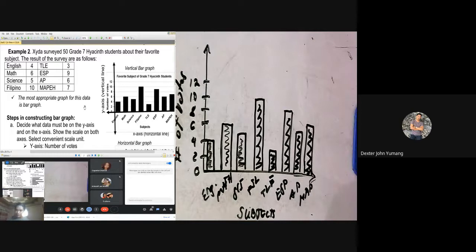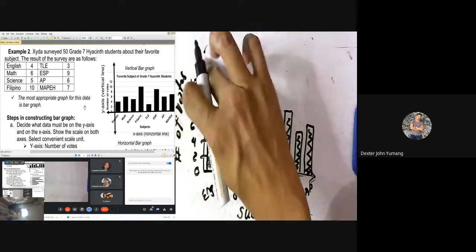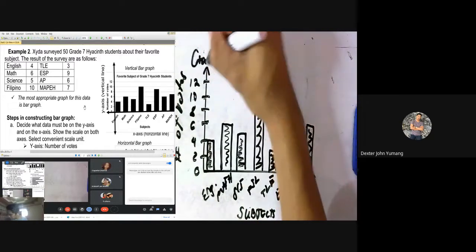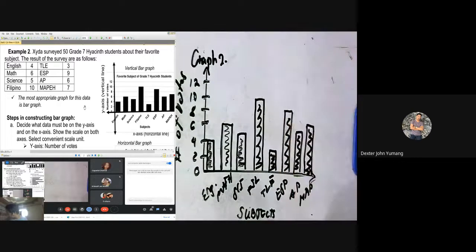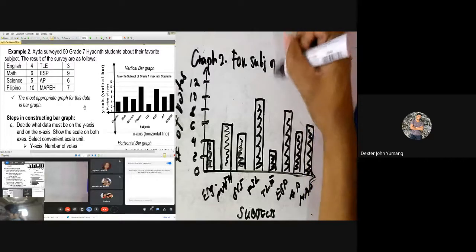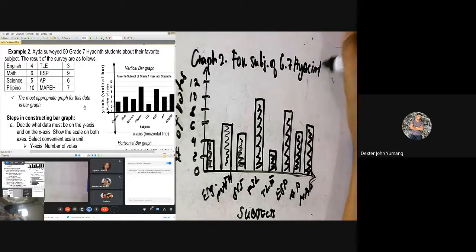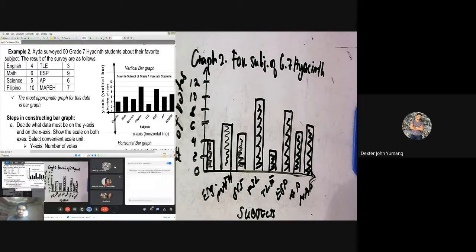So that's the bar graph. Now we're still missing something: the title. So you have to make sure to write the title. We have graph number 2. These are the favorite subjects of grade 7 Hyacinth. That's the title. Where did I get the title? From example number 2. It says they surveyed 50 grade 7 Hyacinth students about their favorite subjects. So that's how we make our bar graph in this lesson.